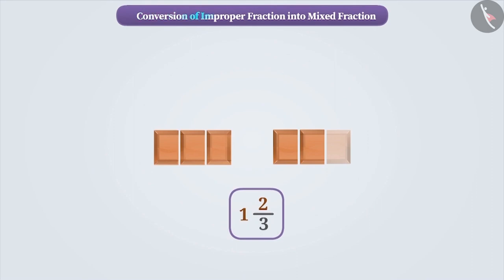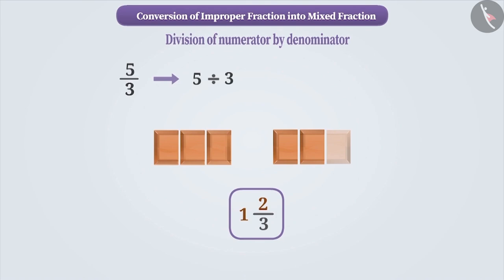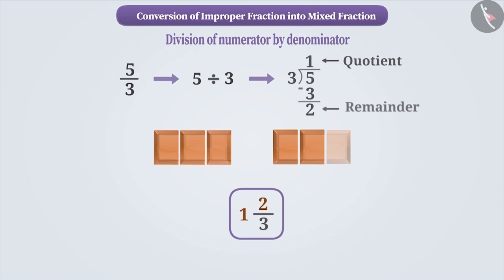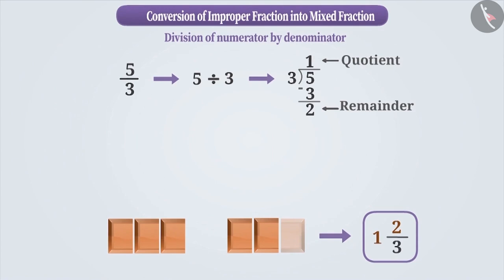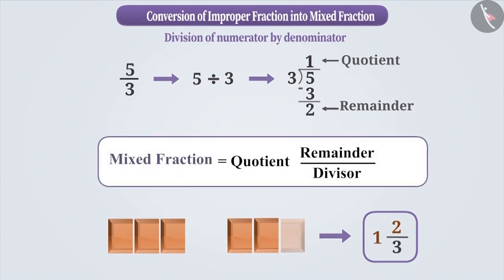In order to do this conversion mathematically, we divide the numerator by the denominator, which means we express 5 by 3 in division form. Upon dividing, we get the quotient and the remainder. Now we express the mixed fraction in this way. Therefore, we get the mixed fraction 1 and 2 by 3.